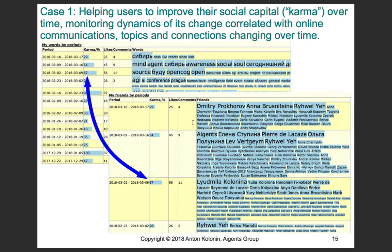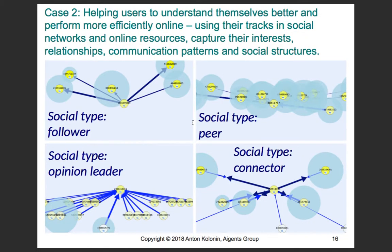For one example, you can track how the amount of attention you attract online and the reputation you gain changes based on topics you discuss, and which of your friends and colleagues are contributing to changes in your reputation. For another example, you can check which sociological type you are — whether you are a leader or follower, whether you are surrounded by lots of peers with the same level of reputation as you, or whether you are a social hub connecting multiple opinion leaders with an audience of your own followers.